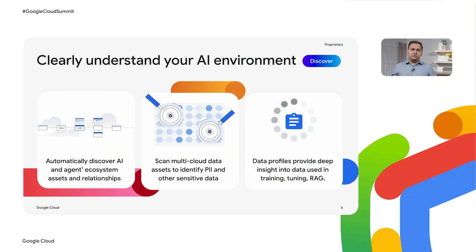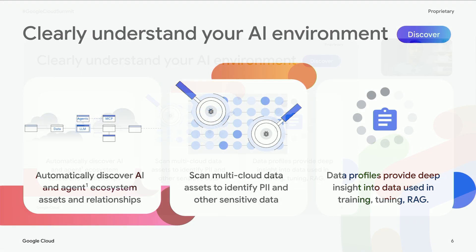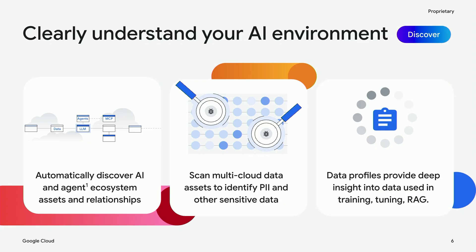Effective AI risk management begins with a comprehensive understanding of where and how AI is used across your environment. AI protection automatically discovers and catalogs AI assets, including the use of models, applications, infrastructure, and data, and their relationships. Customers can clearly identify how many projects have AI usage, which foundation models like Gemini are being used, how many custom models exist, which datasets are being used to train or fine-tune these models in RAG pipelines, and how many of these datasets contain personally identifiable information and other sensitive data types.